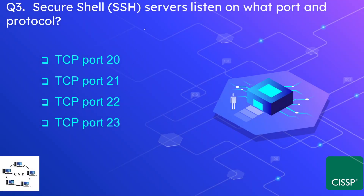Question number three: what port and protocol does a Secure Shell server listen on? The options are TCP port 20, TCP port 21, TCP port 22, and TCP port 23. The correct answer is TCP port 22. TCP port 23 is used by Telnet, which is SSH's counterpart, while ports 20 and 21 are both used for FTP.